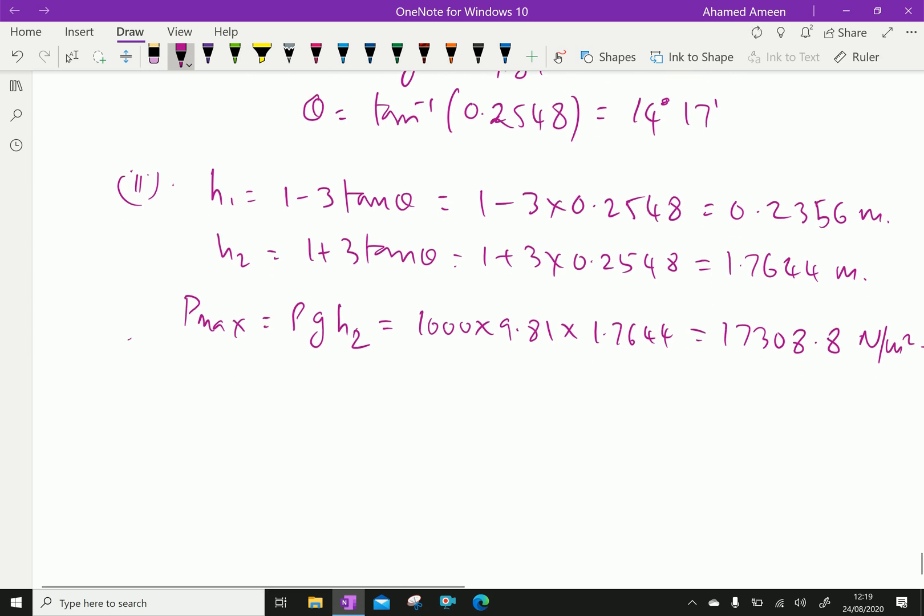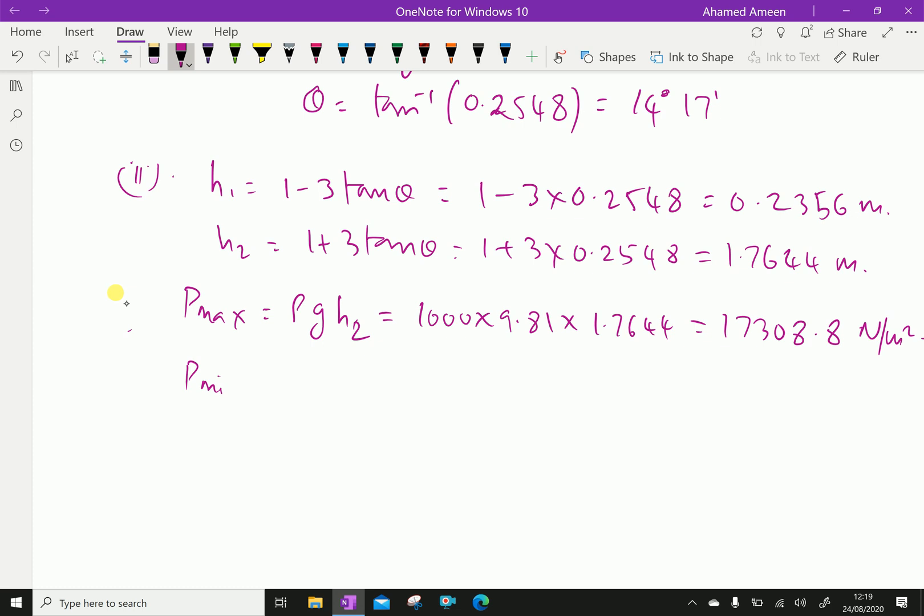P minimum equals rho g h1, which is 1000 times 9.81 times 0.2356, giving 2310.2 Newtons per meter squared approximately.